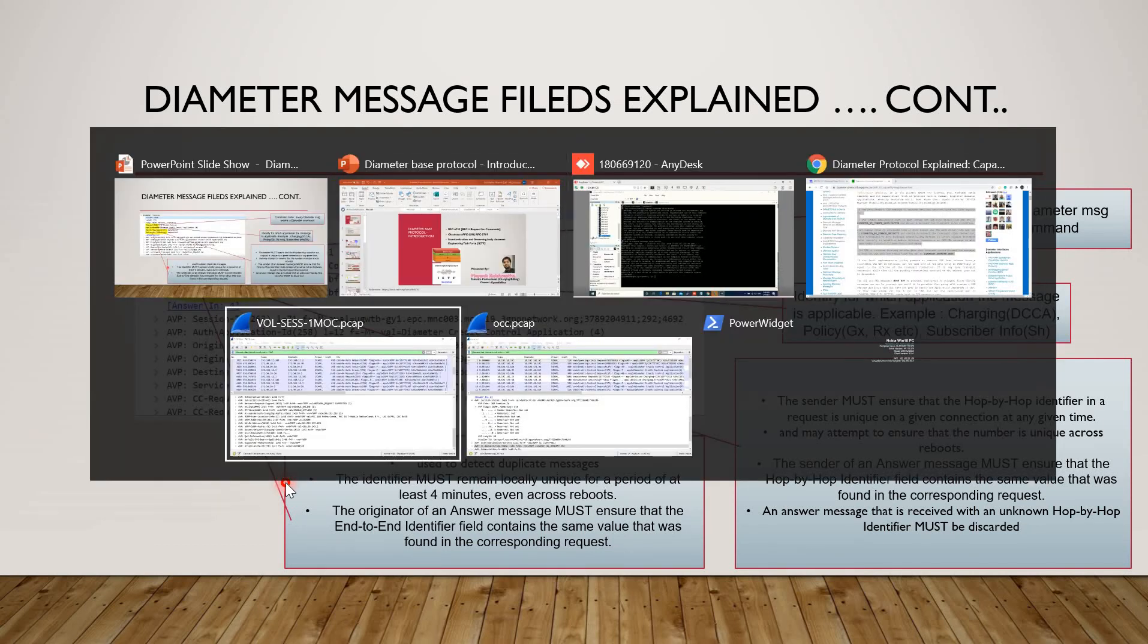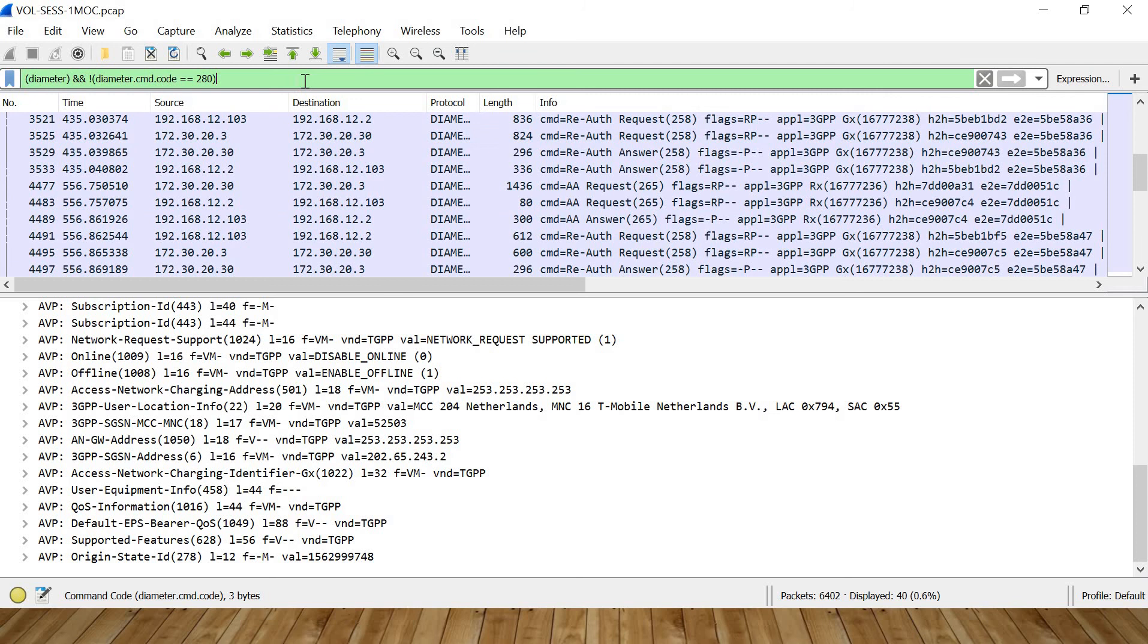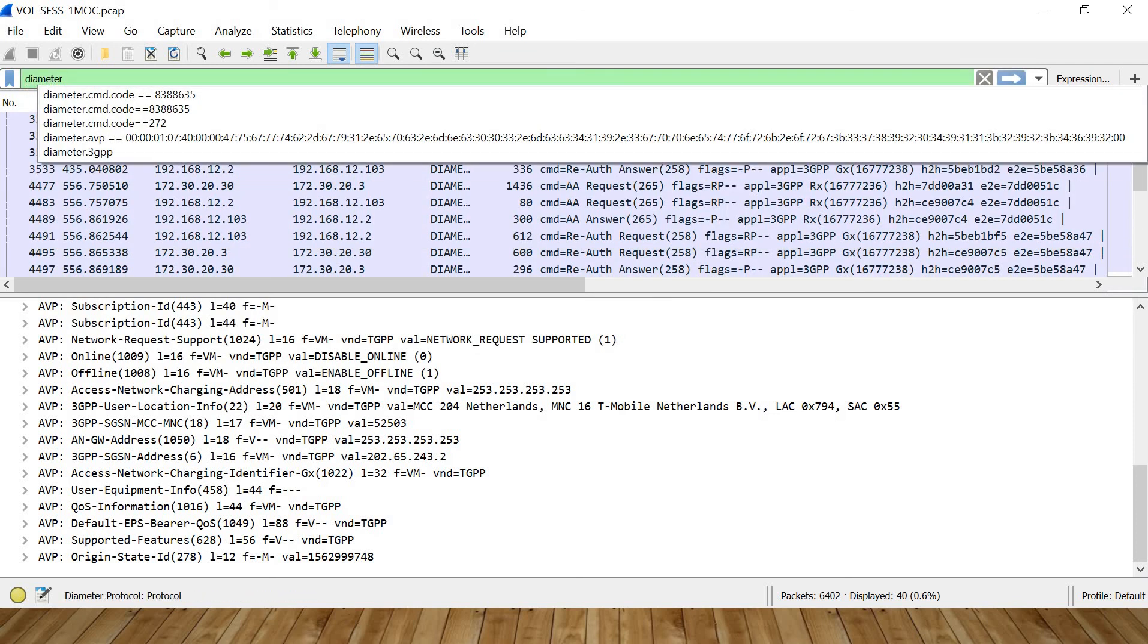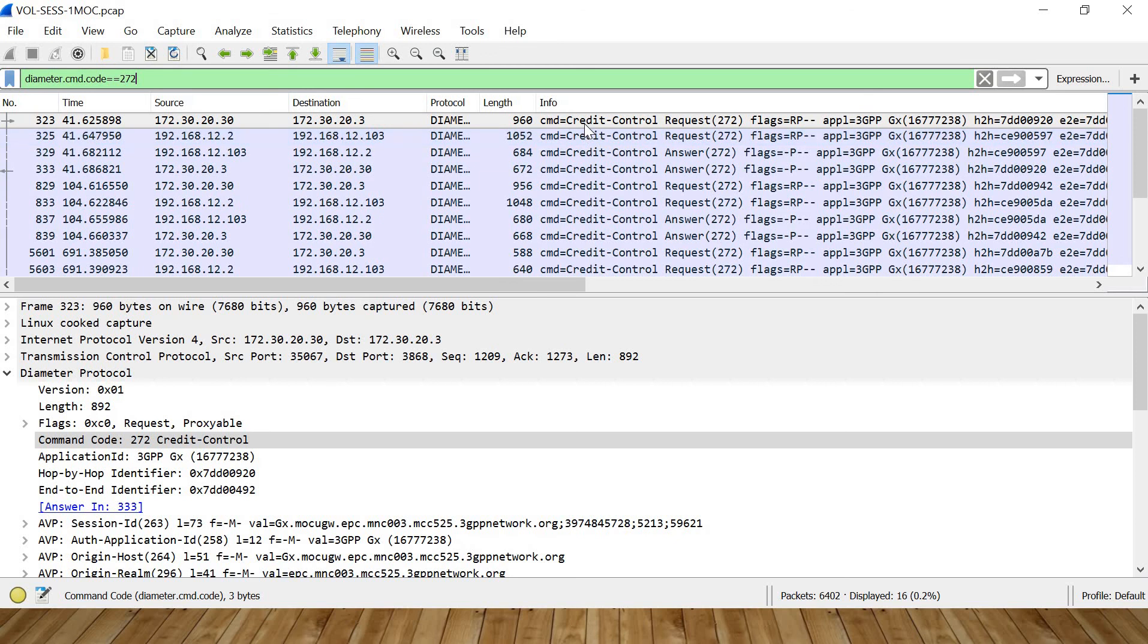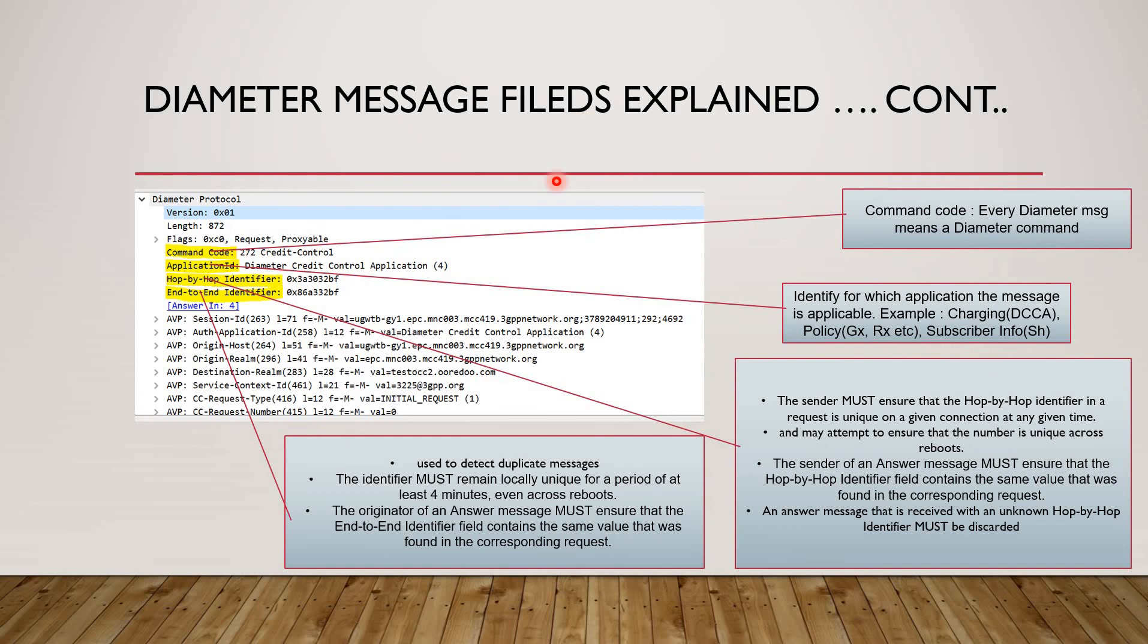Let's take this one. 272. If I write here diameter dot 272, you can see if I write like this I can filter out all the credit control requests. And same you can see in this slide also. This ID is helpful in that if I write credit control it's a text base and you know guys text base searching is something very difficult.